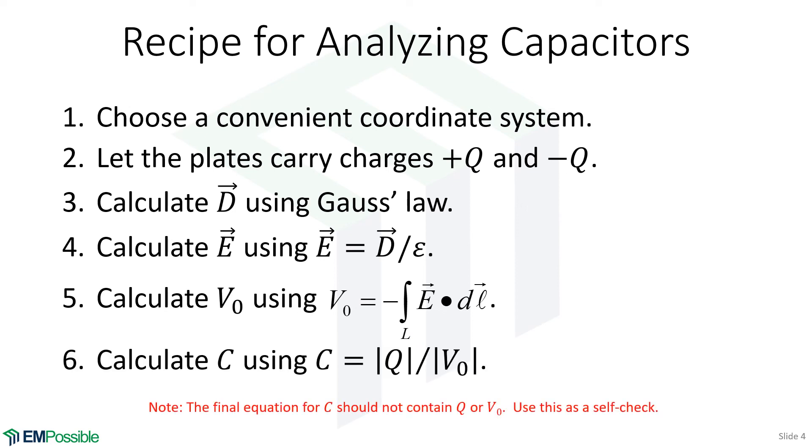Now we have everything to calculate capacitance. It's our charge divided by the applied voltage, and we don't care about signs. In the final equation, that should not contain charge or applied voltage. The capacitance of a structure should only be a function of its size and shape and the permittivity of the medium between the plates. So if you've derived the equation and it has charge or voltage still in it, that's a mistake. Use that as a self-check.